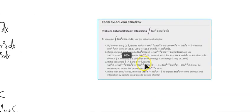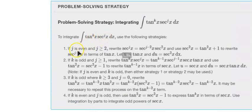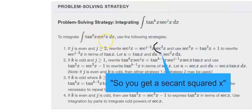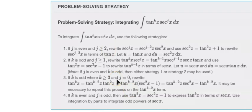Your book has a problem-solving strategy worth reviewing. The key idea: if the power of sec (j) is even and greater than 2, rewrite to extract a sec²x factor — that sec²x goes with dx as du when u = tan x. The strategy really comes down to: do I want a sec²x or a sec x · tan x? Make that happen and get everything else in terms of the other function, either tangent or secant.